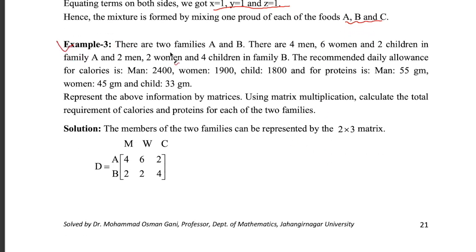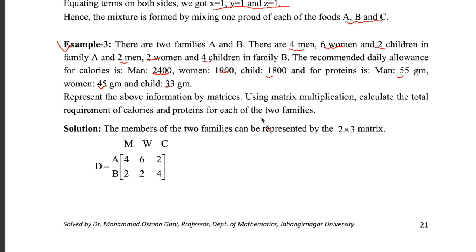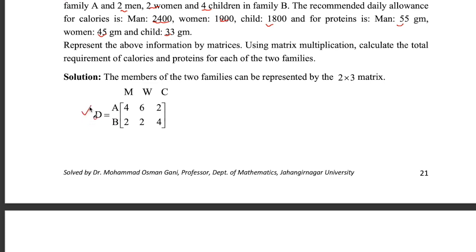In this problem there are two families A and B. In family A: four men, six women, and two children. In family B: two men, two women, and four children. The recommended daily allowance for calories for men, women, and children is given respectively, as are the protein grams. Represent the above information by matrices and use matrix multiplication to calculate the total requirement of calories and proteins for each of the two families.